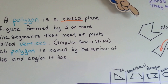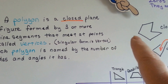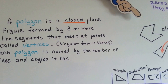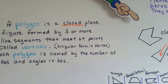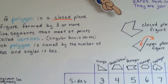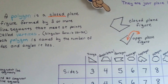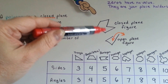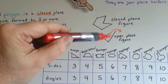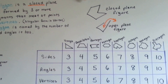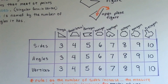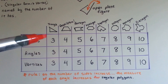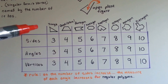The singular form is vertex — that's one. If it's more than one, it's vertices. Each polygon is named by the number of sides and angles it has. Here's the number of sides, angles, and vertices that they have.